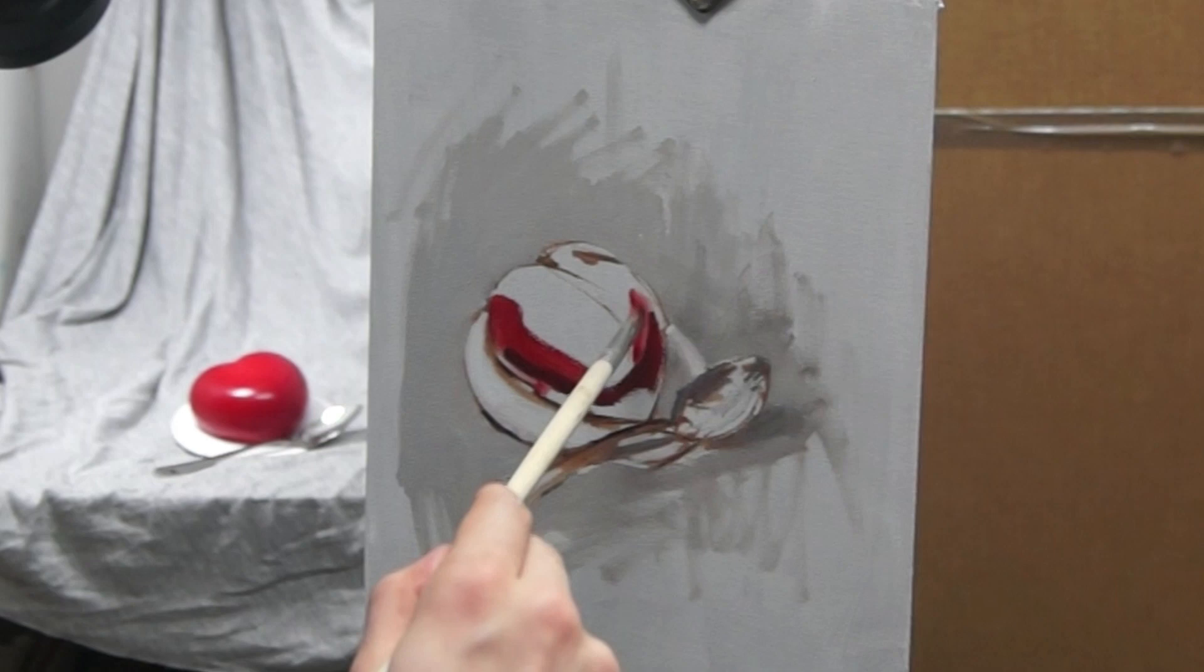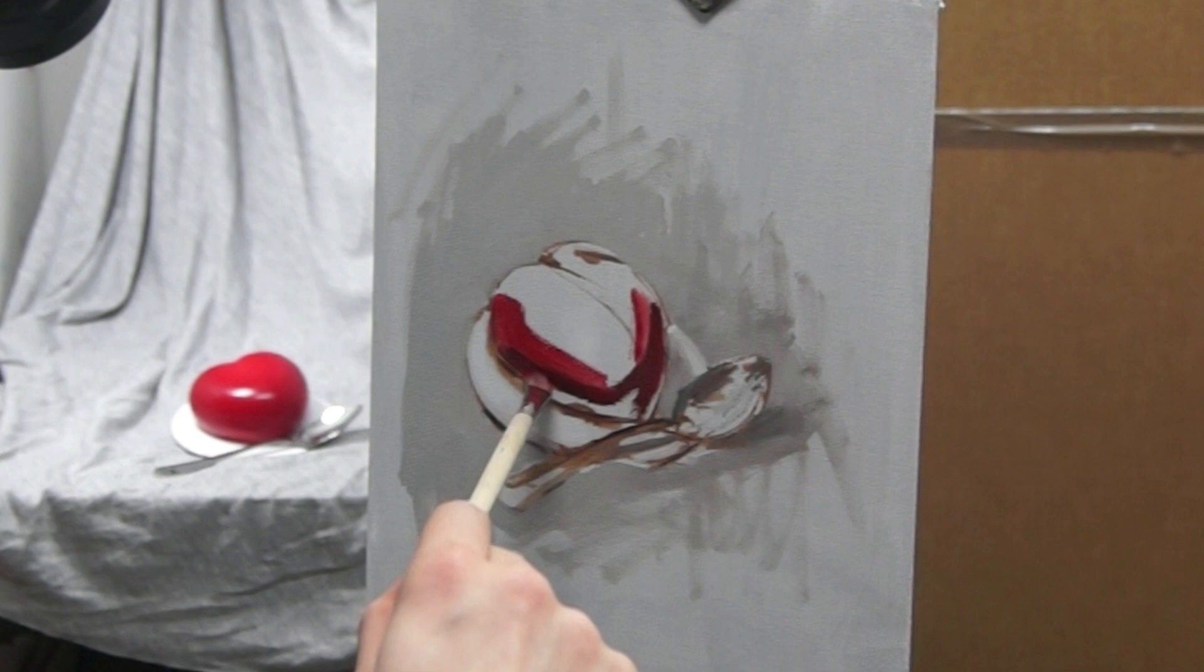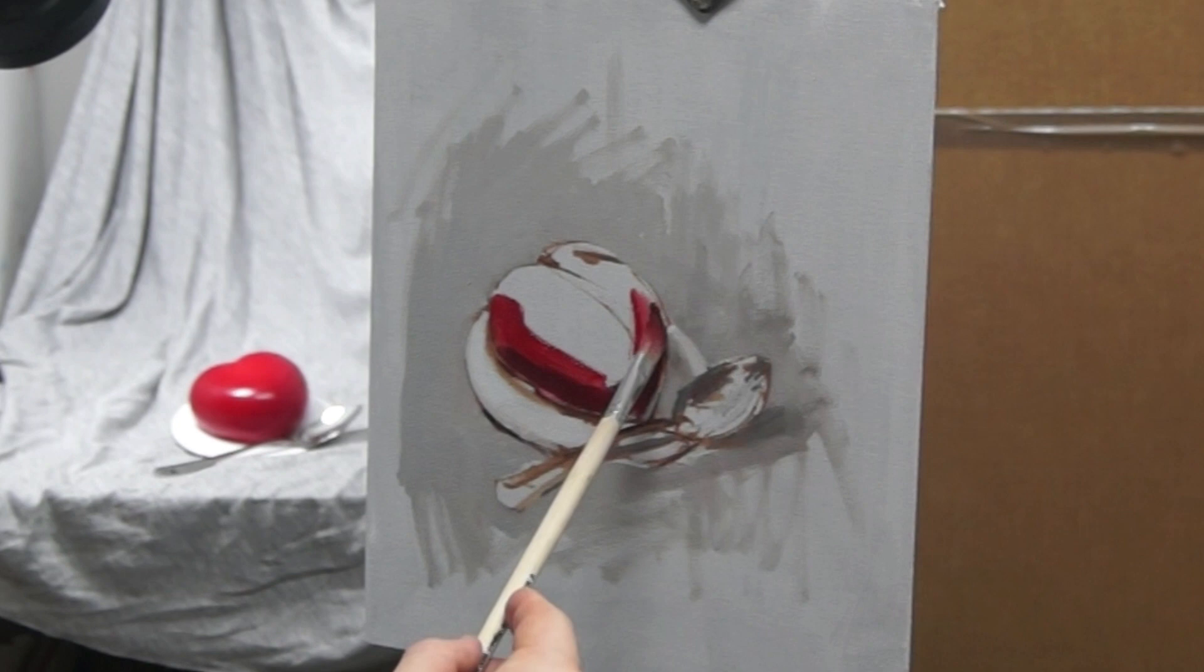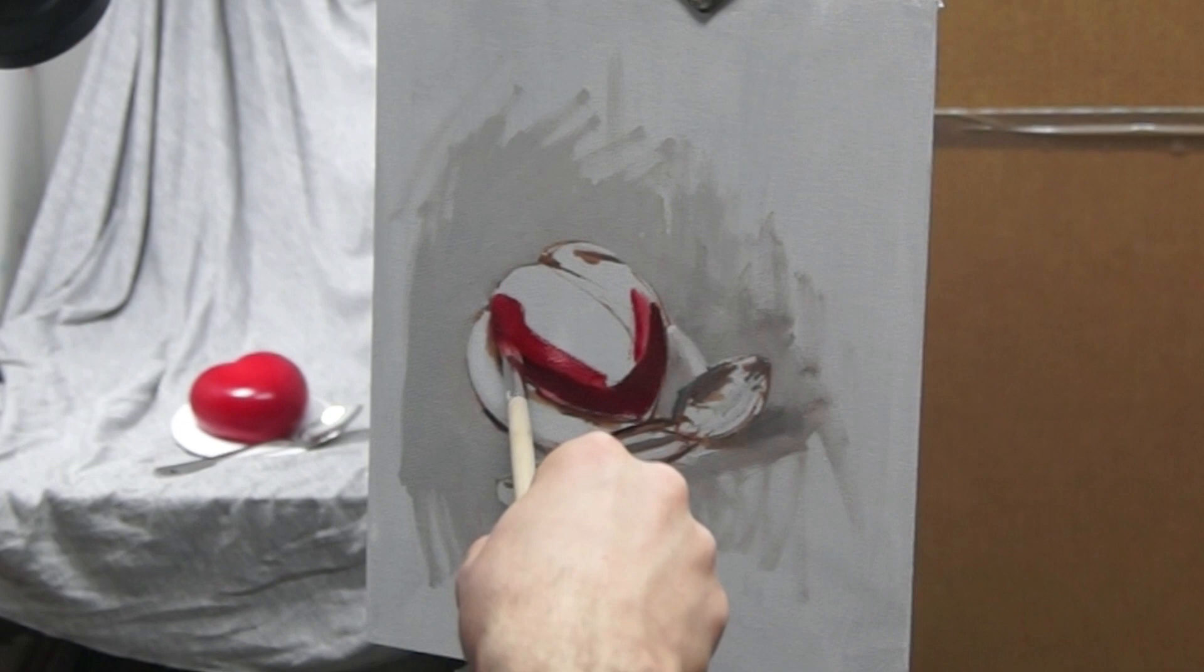As I paint this heart cake I start by painting in the shadow sections of the cake which are lower down nearer the base and also on the right hand side which is further away from the light. I'm painting the shadows in quite thinly as it's nice to paint thin shadows as this gives them a bit more transparency.